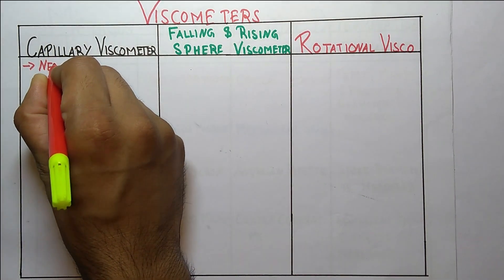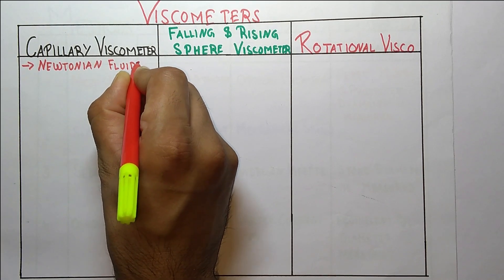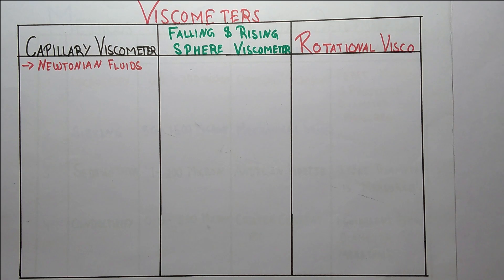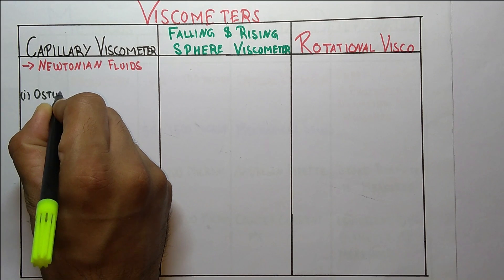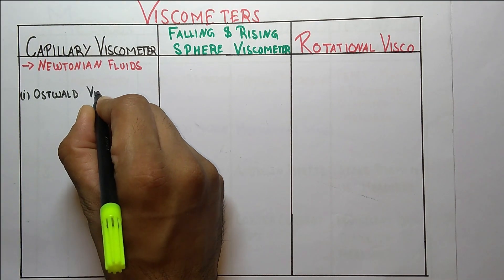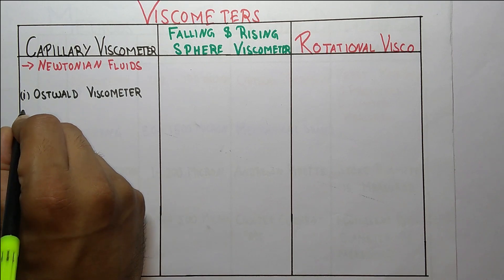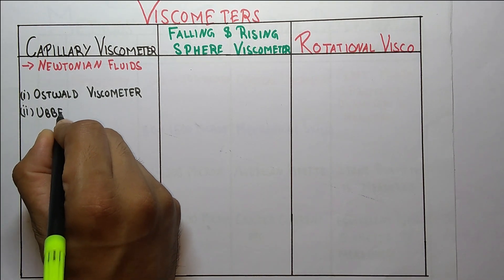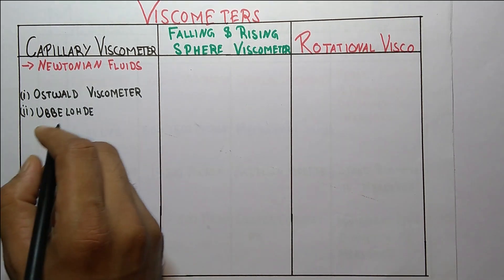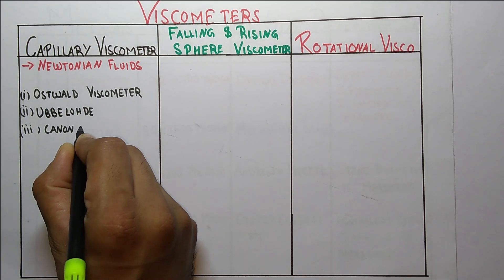There are three types of capillary viscometers. The first one is the Ostwald viscometer, the second one is the Ubbelohde viscometer, and the third one is the Canon Fenske viscometer.